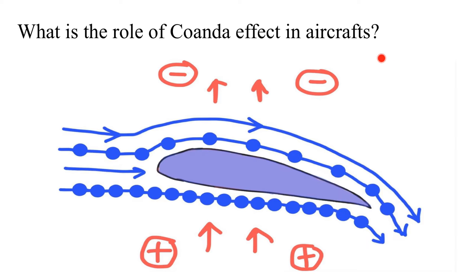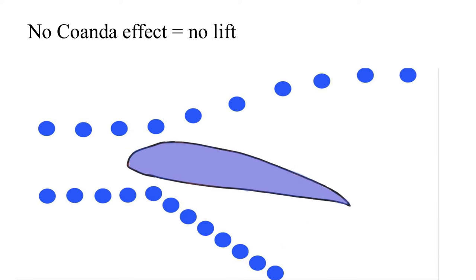What is the role of the Coanda effect in aircraft? Just like birds, the aircraft industry also shaped its wing like an aerofoil. Lift occurs when there is greater pressure below the wing compared to relatively lower pressure above the wing — due to compressed air below versus rarefied air above — leading to a pressure difference and generation of lift. However, all of this would not happen without the Coanda effect, which leads to the sticking of air molecules onto the surface of the wing, hence generating effective lift. Without the Coanda effect, there would be no lift and no flying from one country to another.